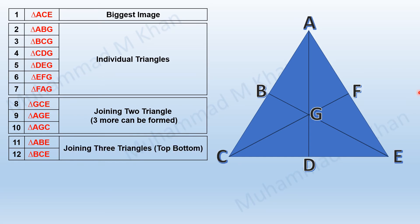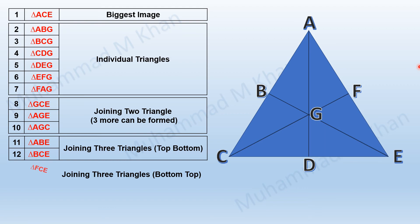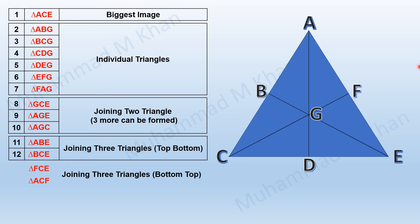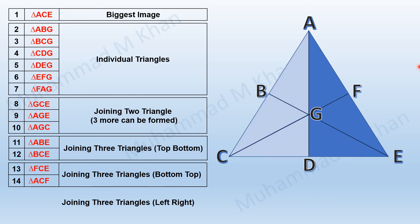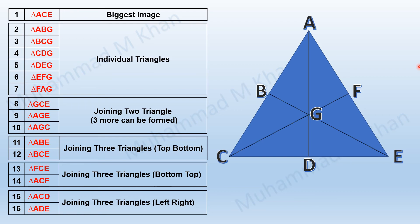Repeating the same step but this time from the bottom up, joining two triangles first and then adding a third gives us triangle FEC. The upper portion forms triangle ACF, bringing the total to 14. Joining three figures on the left gives triangle ACD, and joining three figures on the right gives triangle ADE. The total number of triangles in this figure is 16 — which was the right answer.